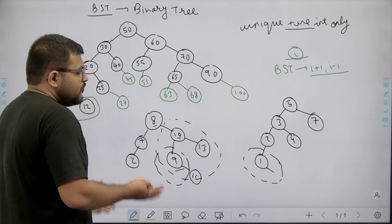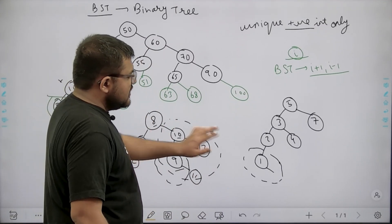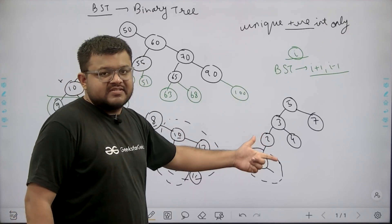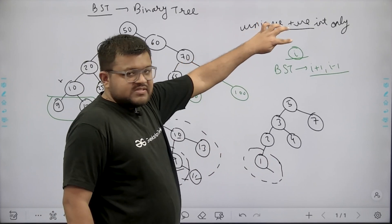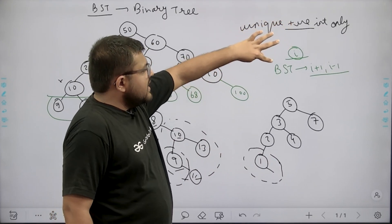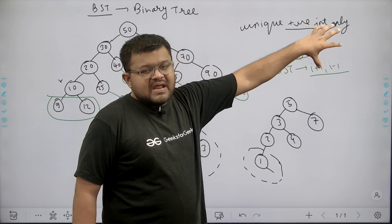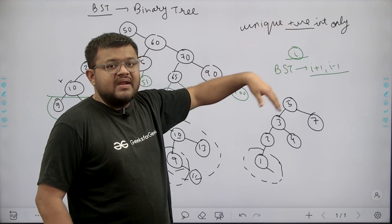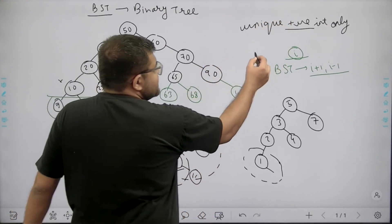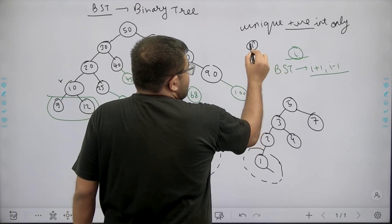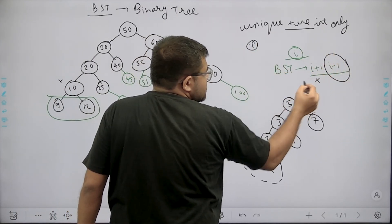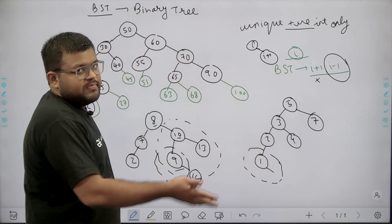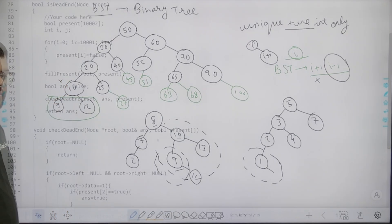So there are two cases for all leaf nodes. If the leaf node value is 1, check whether 2 is present in the BST — if yes, it is a dead end. If the leaf node value is some other positive integer i, check whether both i+1 and i-1 are present in the BST — if both are present, it is a dead end. If only one of them is missing, we can still insert a child, so it is not a dead end.